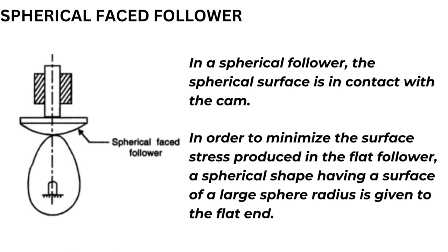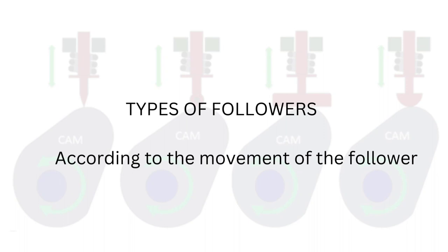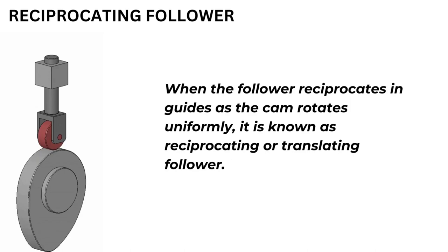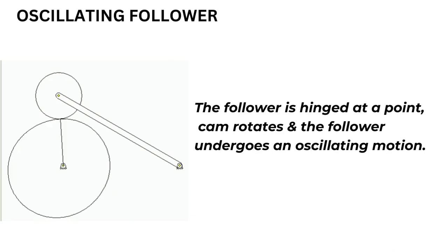Types of followers according to the movement of the follower. Reciprocating follower: when the follower reciprocates in guides as the cam rotates uniformly, it is known as a reciprocating or translating follower. Oscillating follower: the follower is hinged at a point; the cam rotates and the follower undergoes an oscillating motion.